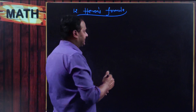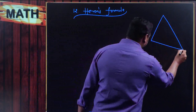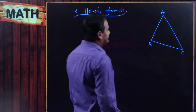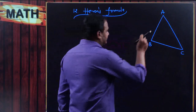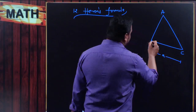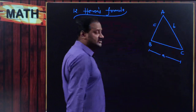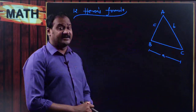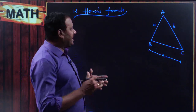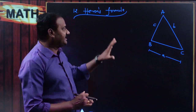Let me take one triangle, let it be triangle ABC. In triangle ABC, the side opposite to A is small a, side opposite to B is small b, and side opposite to C is small c. So small a, small b, small c are the lengths of the sides. When I know the base as well as the corresponding altitude, then only I can find the area.